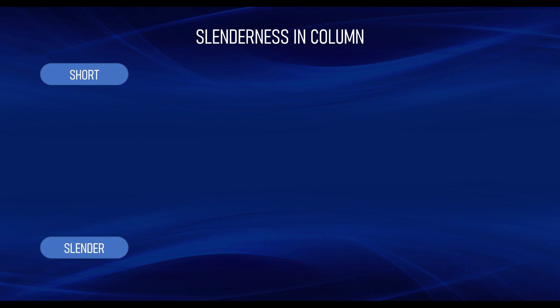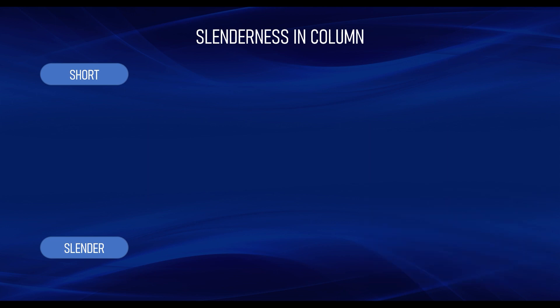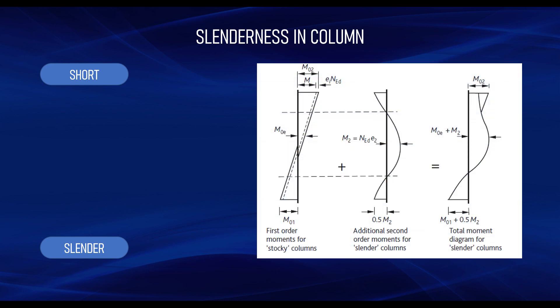First order effects on a column means that the action effects are determined from only the structural loadings on the building — we are not considering structural deformation within the structure. When a column is slender, there is a tendency for it to deform internally under load, which can lead to buckling and other structural defects. The first diagram shown illustrates the effect of first order moment on a column, which arises from external loads applied to the column including its self-weight.